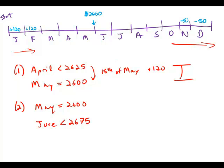Well, again, on the 15th of June, only one of two things could have happened. We either added $120 or subtracted $50. Well, if we added $120, there'd be no way that it would go up and it would be a value less than $2,675. So the only way that we could get a value less than $2,625 starting from $2,600 is if we subtracted $50.